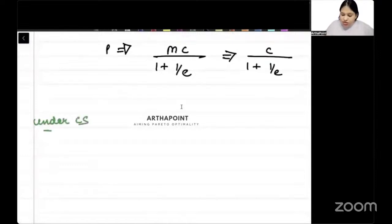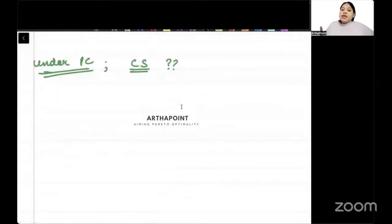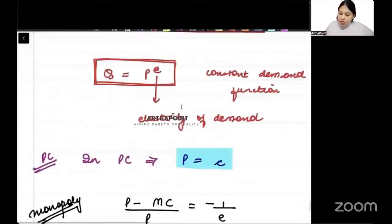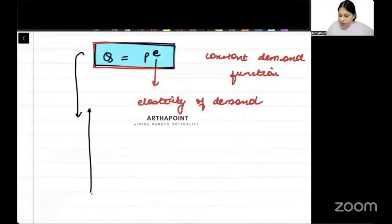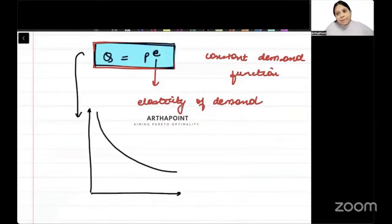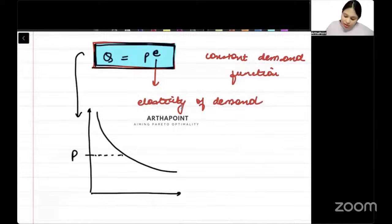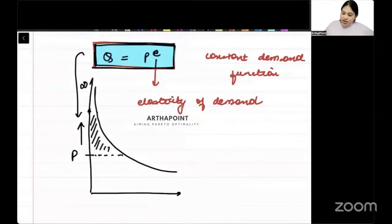Under perfect competition, what is consumer surplus? Consumer surplus is the area below the demand curve and above the price. Now when we have Q equal to P to the power E, our demand curve is a rectangular hyperbola. The area above the price and below the demand curve extends towards infinity, so we will integrate this demand curve from P to infinity.